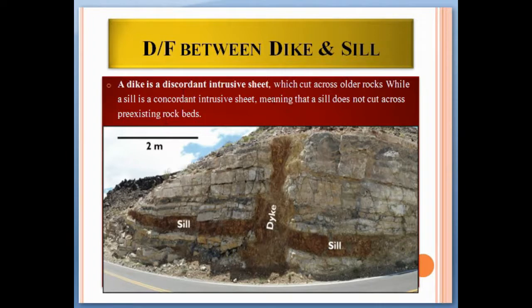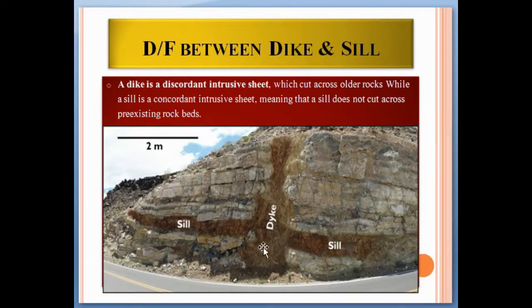The difference between a dike and a sill: a dike is a discordant intrusion that cuts across older rocks, while a sill is a concordant intrusion, meaning it does not cut across pre-existent rock. As seen here, a dike always cuts the pre-existent or older rock, while a sill crystallizes into an intermediate zone between existing rock layers.